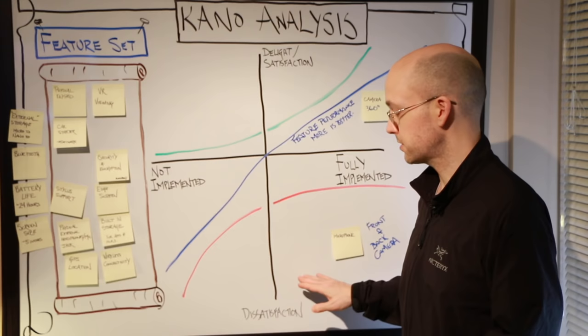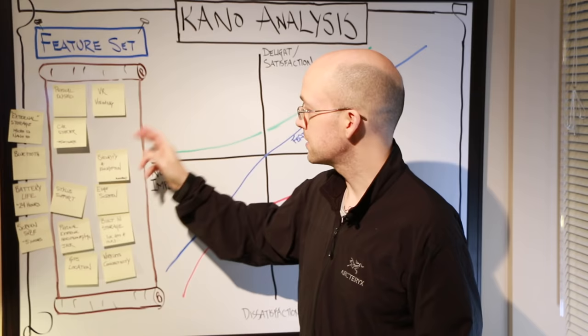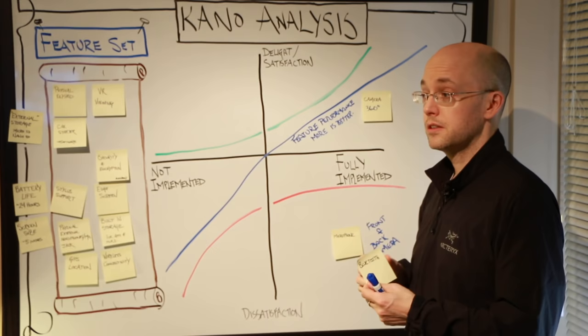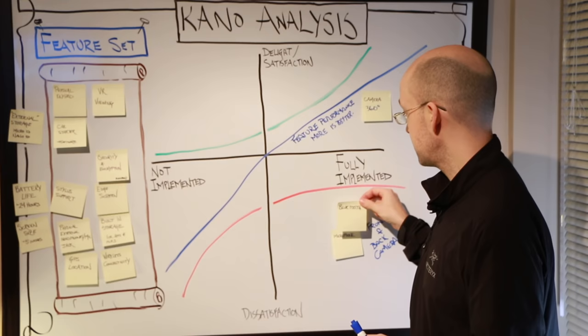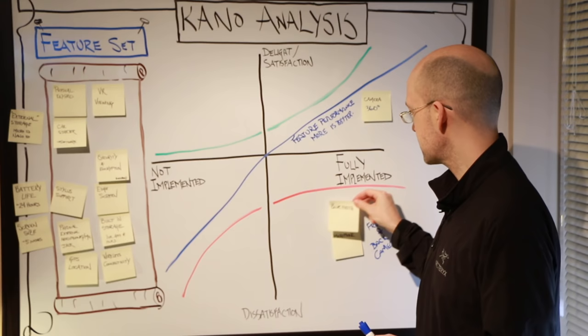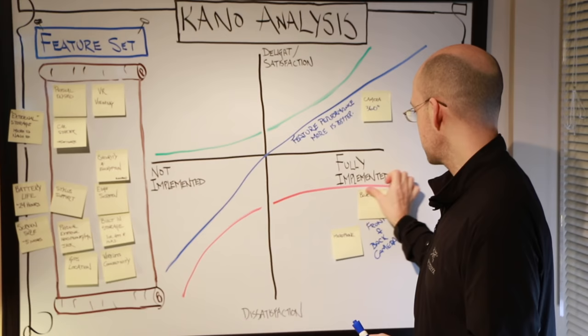So let's place that down into this area where it needs to be fully implemented or it will create dissatisfaction. Another example is, let's move into something like Bluetooth. Now Bluetooth, would our customers be upset if we did not have Bluetooth? I would say yes, that's something that is quite common now. And we have to try to quantify it as well - how much dissatisfaction would happen if it's not fully implemented?